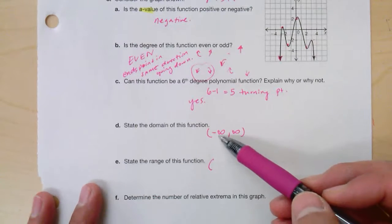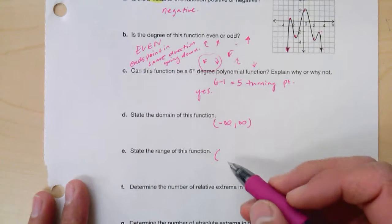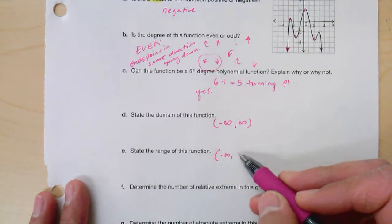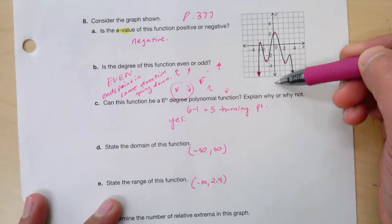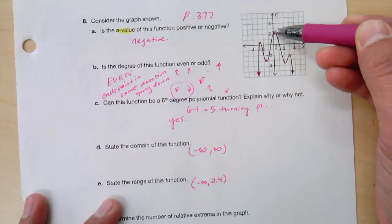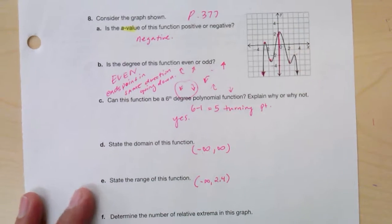The domain happens to be negative infinity to infinity. The range actually is negative infinity to 2.4 or so, so when you look at the graph, you're coming from down upwards, and that's the highest peak, so you kind of give that statement as negative infinity to 2.4.